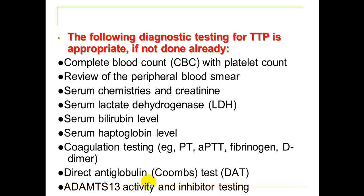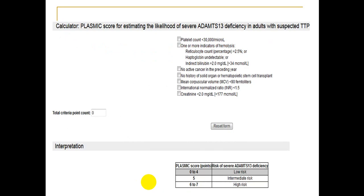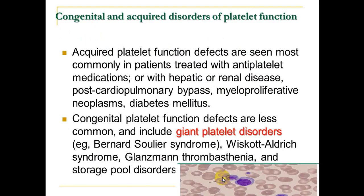The PLASMIC score calculator is used when ADAMTS13 assessment is unavailable. A score of more than seven indicates high risk for TTP. Treatment is plasma exchange, which is the essential and curative treatment.